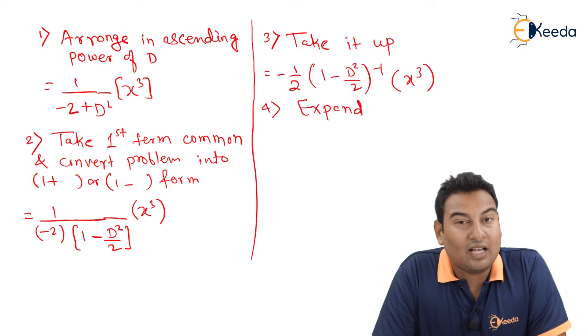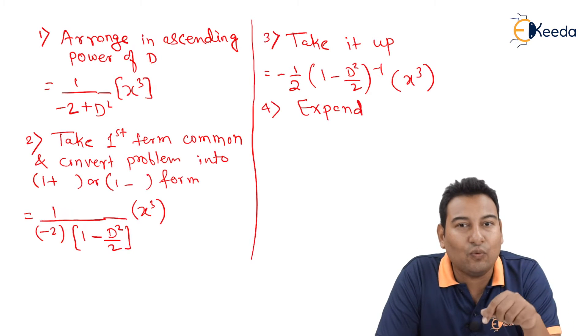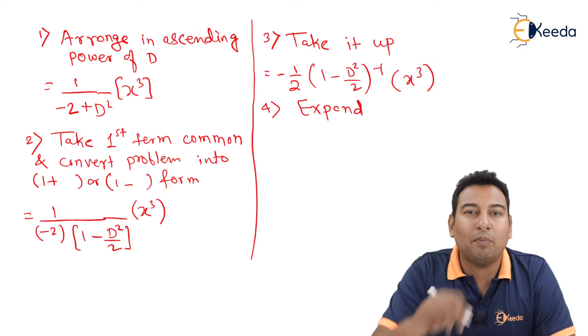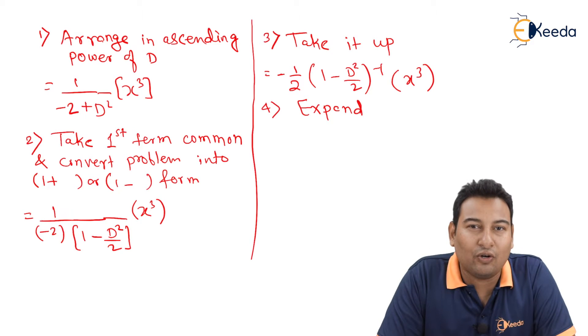We have discussed the formula in the last video also. What is the expansion formula for (1 minus x) inverse? If both are minus, everything will be plus. That is 1 plus x plus x² plus dot dot dot.